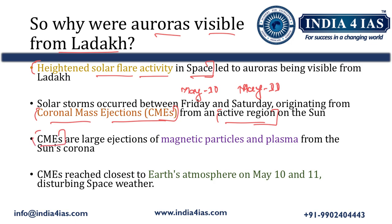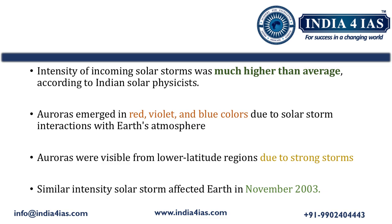A coronal mass ejection is a large-scale ejection of magnetic particles and plasma from the sun's corona. The sun has layers including the convective zone, radiative zone, core, photosphere, chromosphere, and corona — with solar flares originating from the corona region. The structure of the sun was discussed in detail in the Aditya L1 mission video. The intensity of the incoming solar storms was much higher than average, which is why auroras were visible from Ladakh.